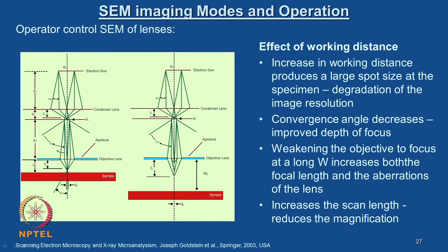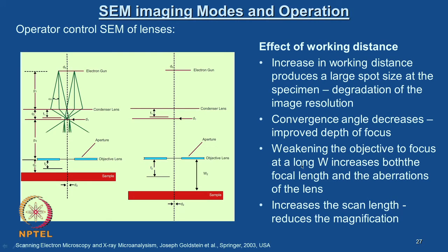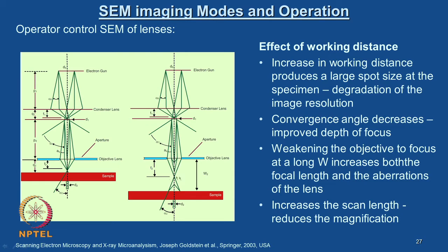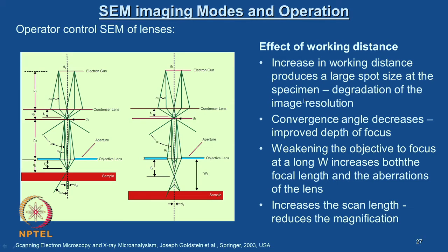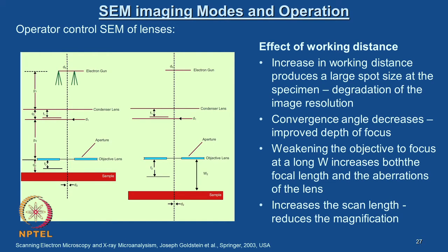The convergent angle decreases with increased working distance, which results in improved depth of focus. Increasing working distance also weakens the objective to focus at a long working distance W, which increases both the focal length and the aberrations of the lenses. This also increases the scan length and causes reduction in magnification. This is an important parameter the operator can control and make appropriate decisions depending on what information is being sought from the specimen surface.